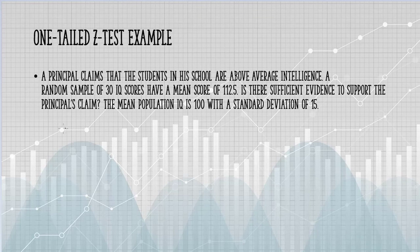In this one-tailed z-test example, a principal claims the students in his school are above average intelligence. A random sample of 30 IQ scores have a mean score of 112.5.